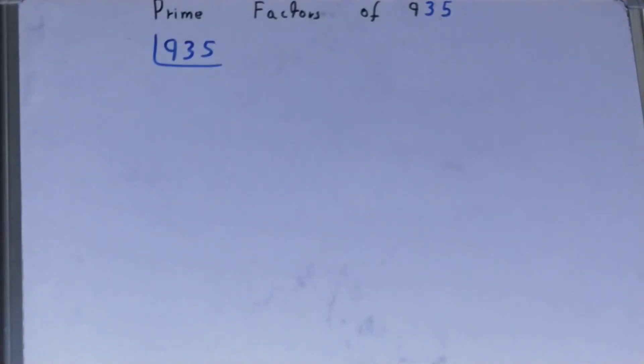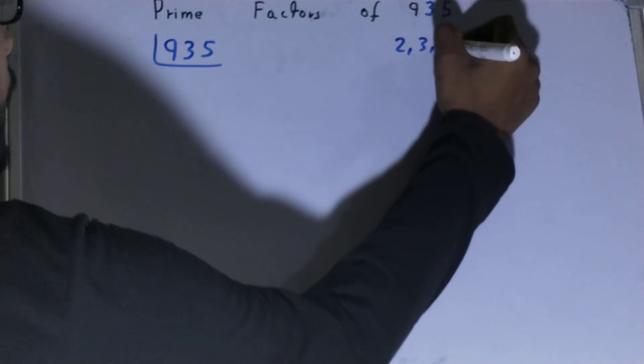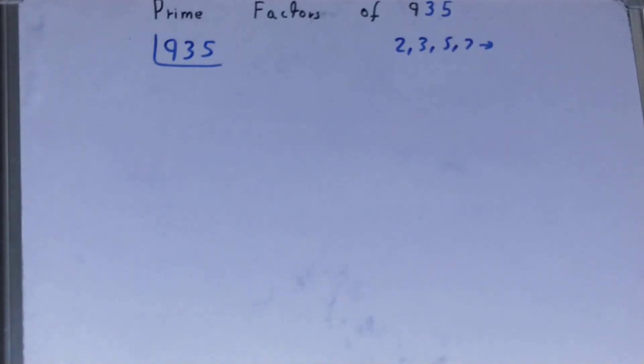You must know what prime numbers are. Prime numbers are numbers that are divisible by one and the number itself, like 2, 3, 5, 7, and so on. We'll be starting with the lowest prime number we have.